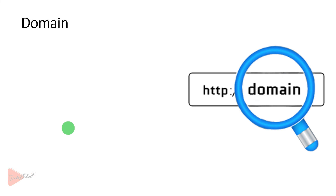The next important topic is domain. In general, in a web browser's search bar, we can search for a website. For example, www.google.com — this is the Google.com address entered in the search bar.